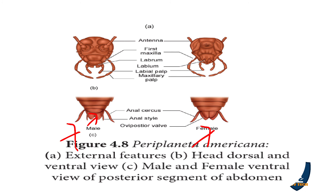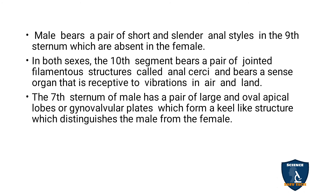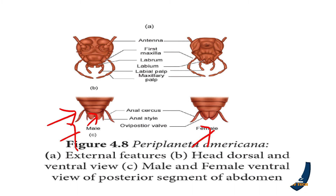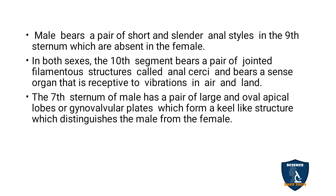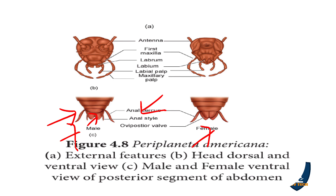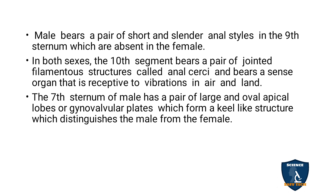The male bears a pair of short, slender anal styles, which are absent in the female. In both sexes, the tenth segment bears a pair of jointed filamentous structures called anal cerci. The seventh sternum of the male has a pair of large oval apical lobes forming a keel-like structure, which helps distinguish male from female.